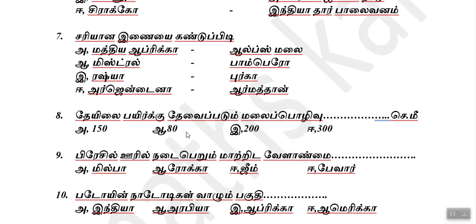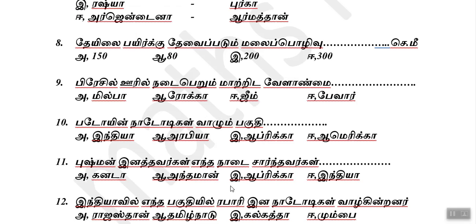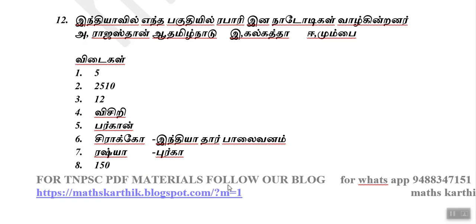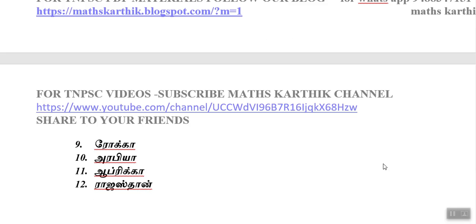The area of Africa, India, maritime, Africa, Asia, Canada, Africa, India. This is the main area of Africa and Asia, from Rajasthan, Tamil Nadu, Kolkata, Mumbai. That was all for the answers. You can subscribe to our channel. Try to find more answers in the description. Thank you so much.